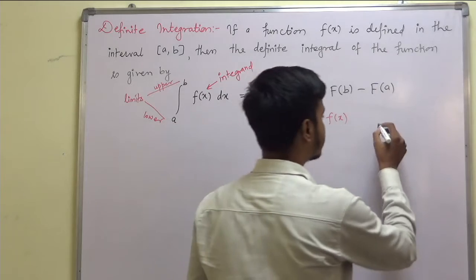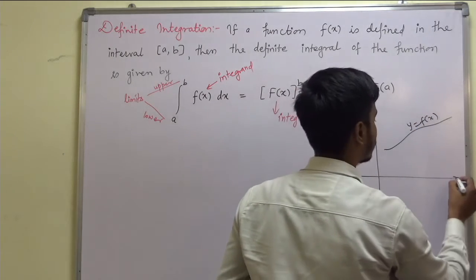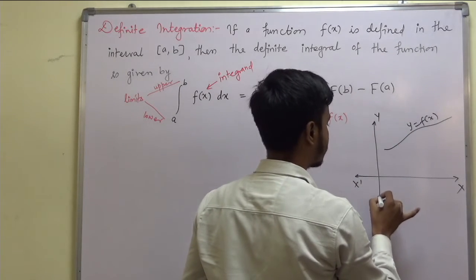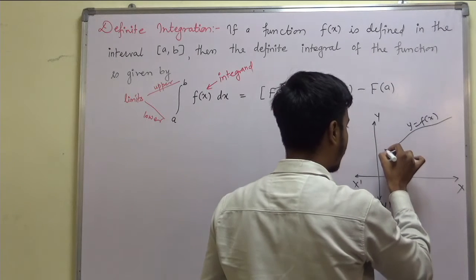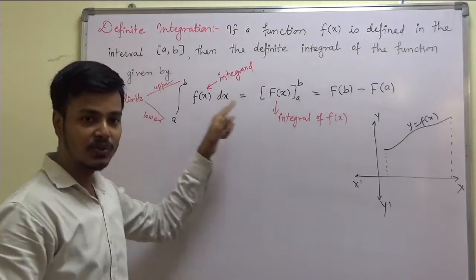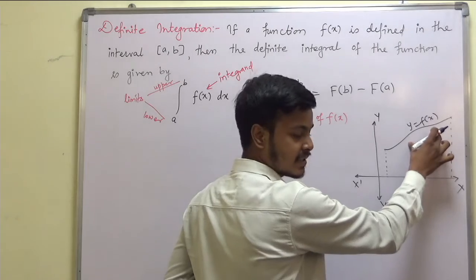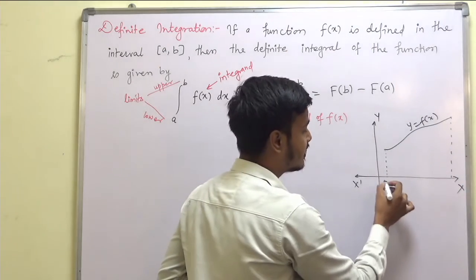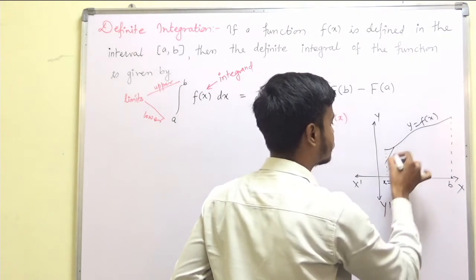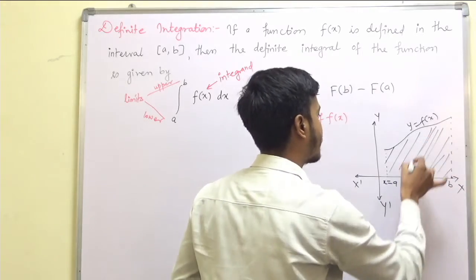Geometrically, if you want to see: suppose you have y = f(x) as the curve, with the x-axis, negative x-axis, y-axis, and y-dash axis. If you want to find the integration of f(x) from a to b, it geometrically represents the area under the curve y = f(x), bounded by the y-axis and the lines x = a and x = b. This is the geometrical interpretation of definite integration.